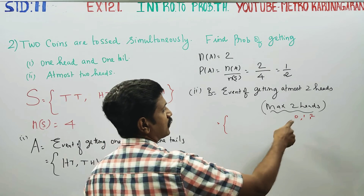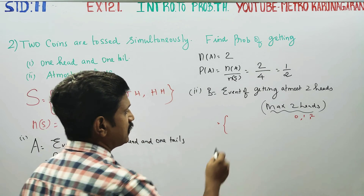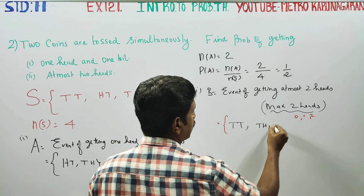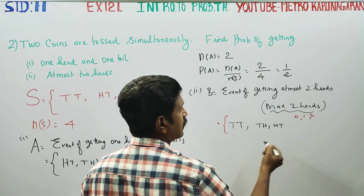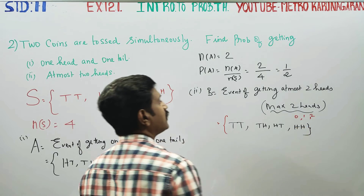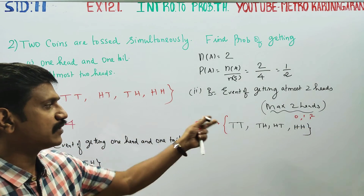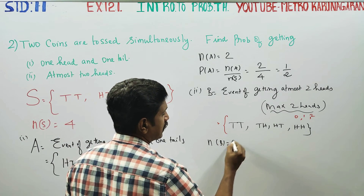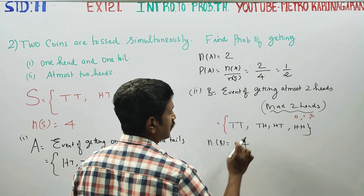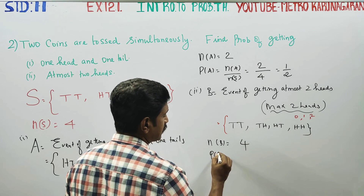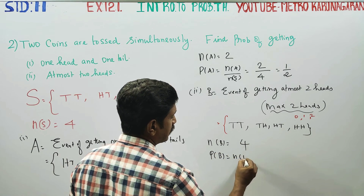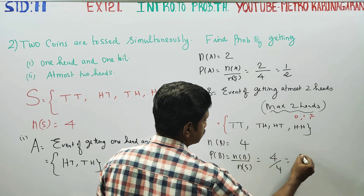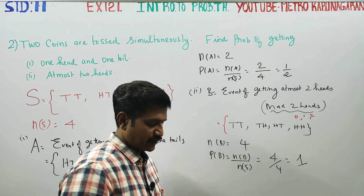At most two heads means 0, 1, or 2 heads. Zero heads is tail-tail; one head gives tail-head or head-tail; two heads gives head-head. All four outcomes qualify. So n of B is equal to 4. Probability of B equals n of B by n of S, which is 4 by 4. Cancelling, the answer is 1. Thank you.